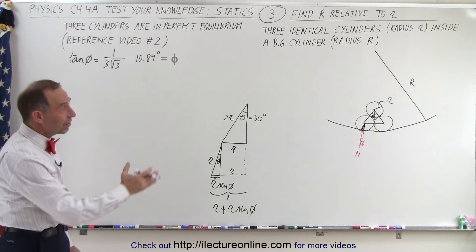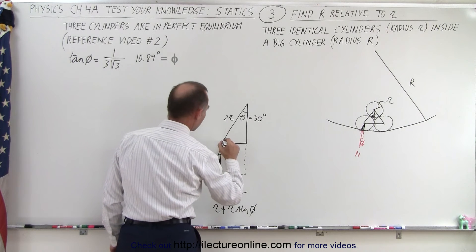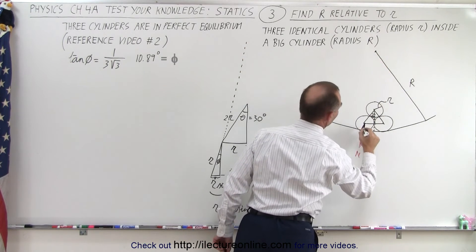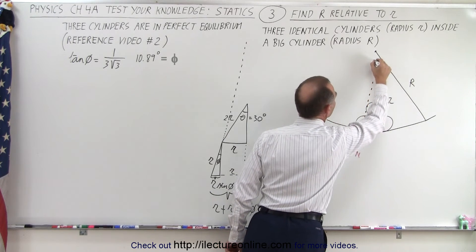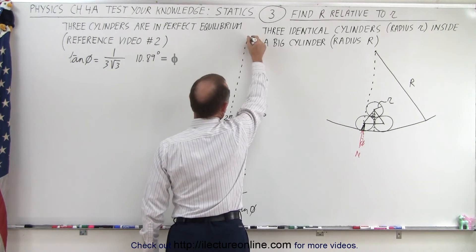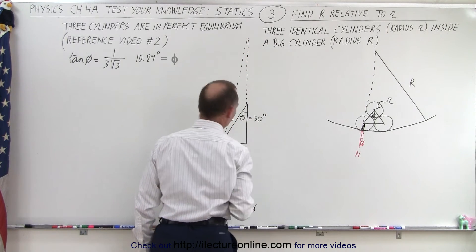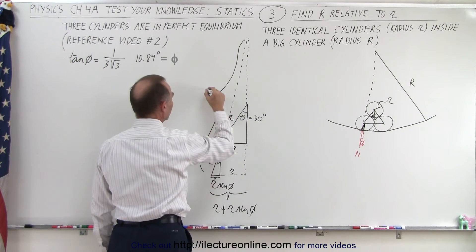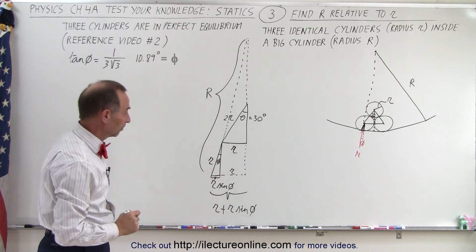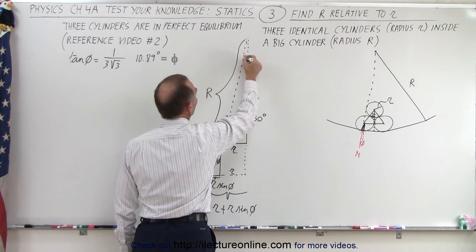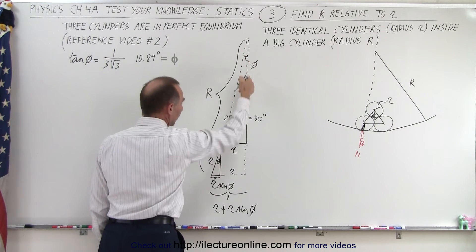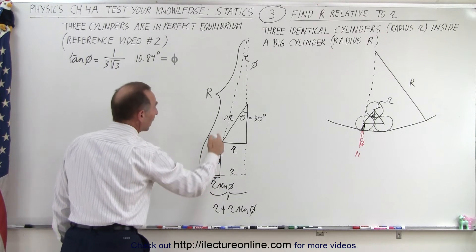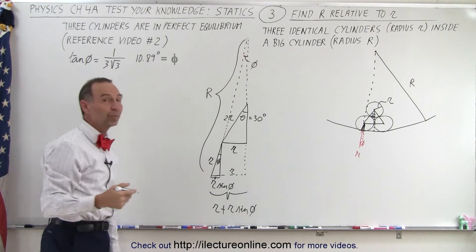Now we need to find big R. If we continue this line all the way up until we meet this point right there, and then come straight down here, we have ourselves another triangle — a big triangle — where the hypotenuse is equal to the radius of the big cylinder. This angle here also must equal phi, because these two angles must be the same. Now we have two similar triangles: the small triangle and the big triangle.